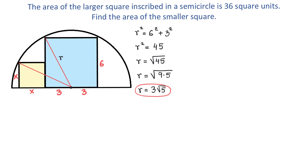Then according to the Pythagorean theorem, x squared plus (x plus 3) squared equals (3 square root of 5) squared. Let's write this equation down and solve it for x. To raise x plus 3 to the second power we can use the formula for the square of a binomial, or we can just use FOIL.